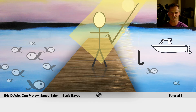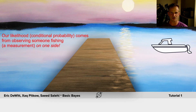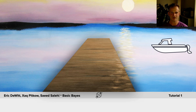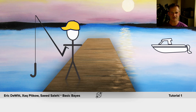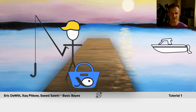But how do we actually decide which side to fish on? We want to take a measurement and improve our guess as to where the fish are. Our likelihood — remember this is a conditional probability — comes from observing someone fishing. It's a measurement on one side of the dock. So let's imagine we walk to the dock and we see a fisher person who has been there for a little while, and we see that they've caught a fish.